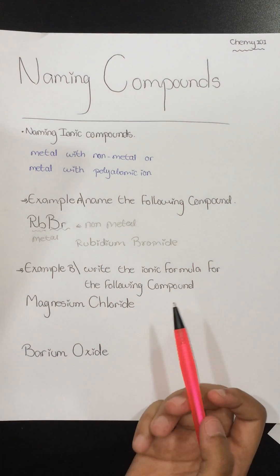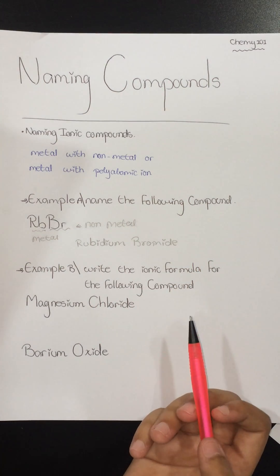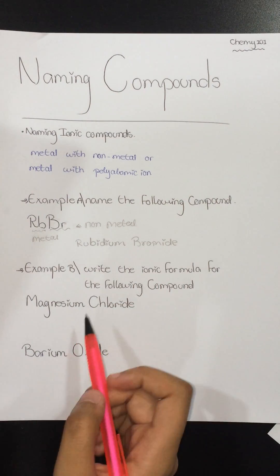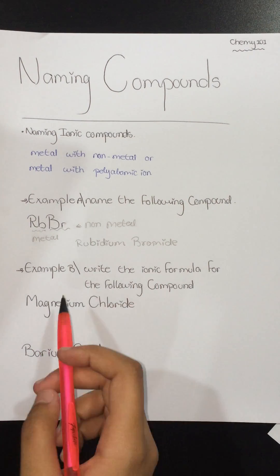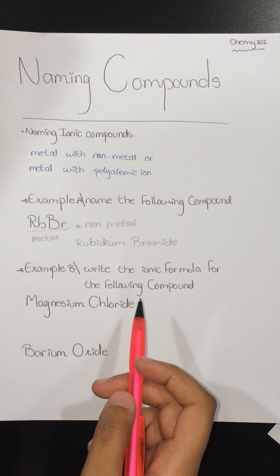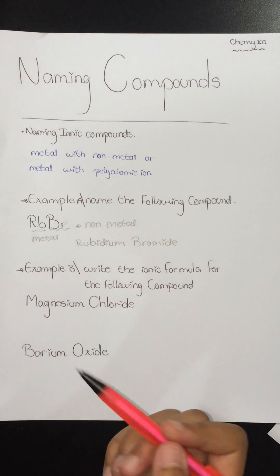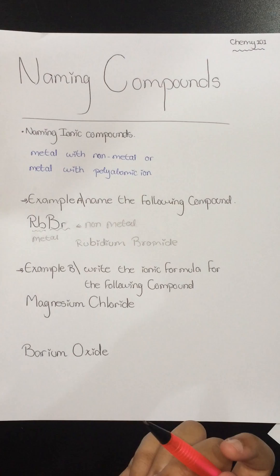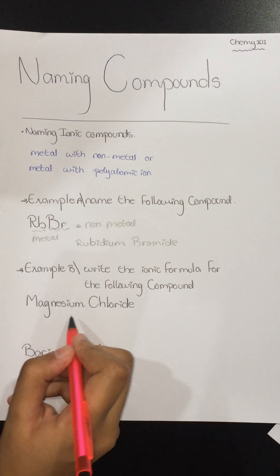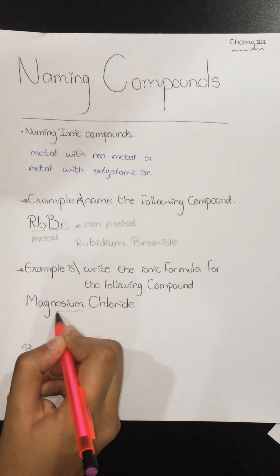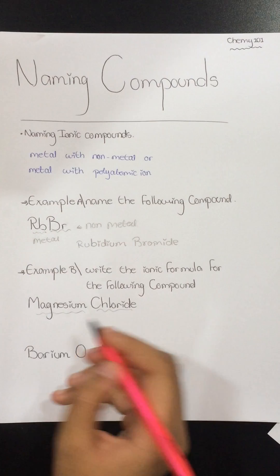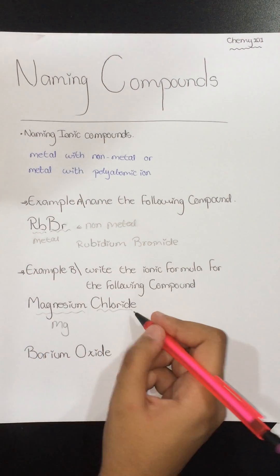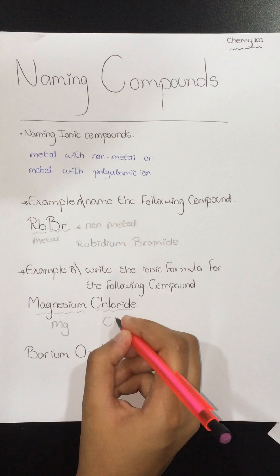What if they want us to write the ionic formula for the compounds? Here we have magnesium chloride, and they want us to write its ionic formula. First, we have to identify our elements. Here we have Mg, magnesium, and chloride — chlorine — Cl.